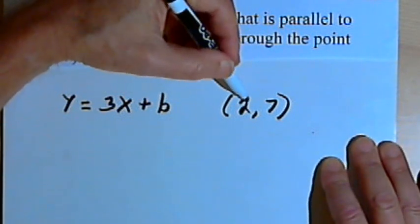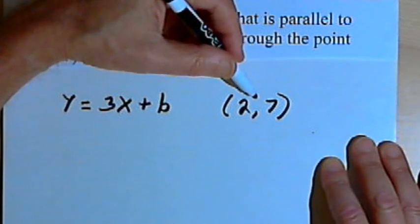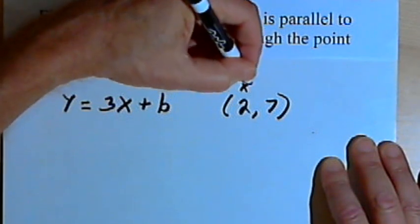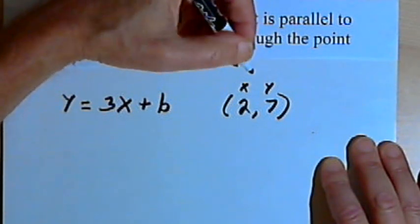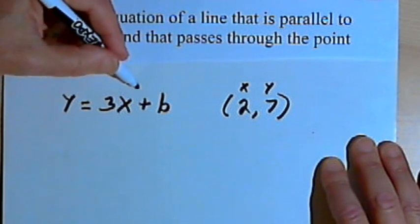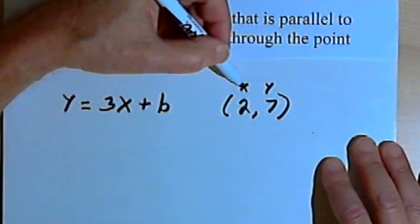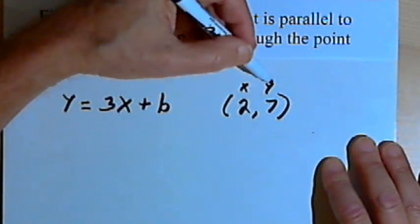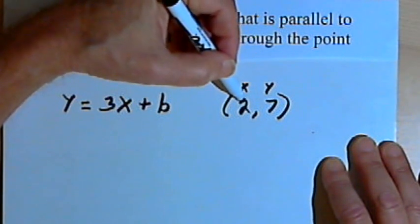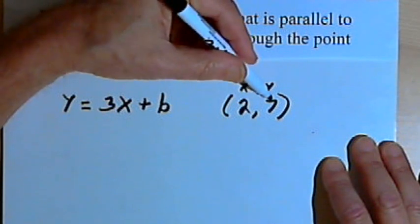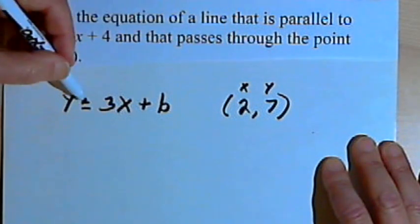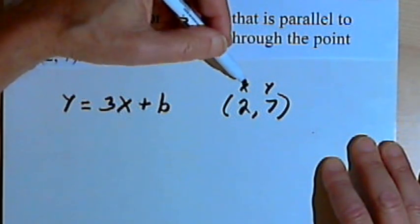Now, any point, any ordered pair can be thought of as an x value and a y value. So in other words, in the equation I'm looking for, in one place I'm going to have an x value that's 2 and a y value that's 7. So I can take these values, the 2 and the 7, and plug them into my equation instead of x and y.